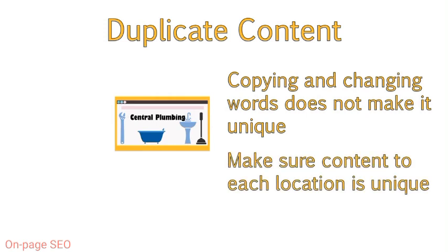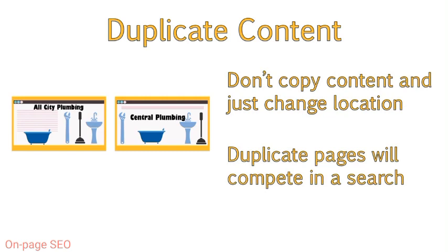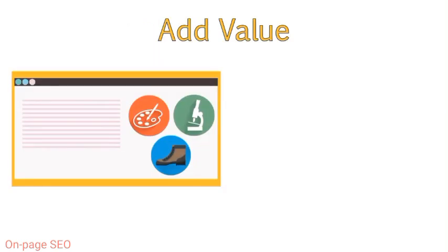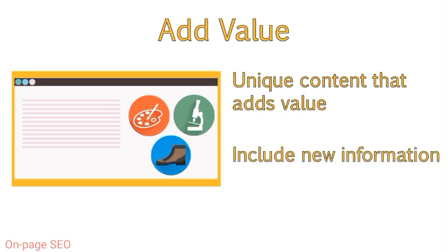For example, if you owned a plumbing site and you serviced multiple cities and wanted to make sure you had a page targeting each of those locations, make sure the content on each of those pages is unique. It would be a bad idea to copy the content to a new page and then just change the location name, thinking this would differentiate the content. If a page on your site is a duplicate of another page of your site, these two pages will compete with one another in search and cannibalize your efforts. In addition to avoiding duplicate content, you should also make sure your content is unique in that it adds something of value that other similar pages or articles do not. Think about how you might include new information or present the information a little differently than other websites to add a unique spin.